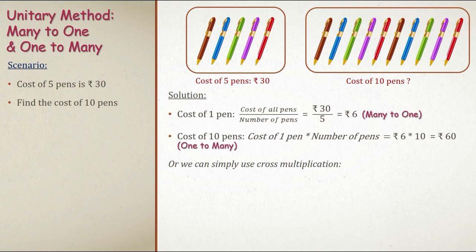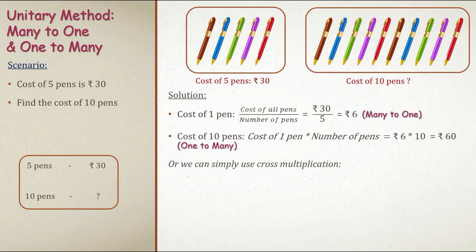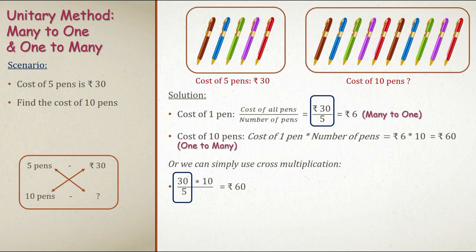Now there is something called the unitary method which is a mix of both many to one and one to many. Cost of five pens is rupees 30 and we need to find the cost of ten pens. Finding the cost of ten pens would be simple if we knew the cost of one pen. So we derive it: cost of one pen is rupees 30 divided by 5, which is rupees 6. Then multiply by 10 to get rupees 60. Or we can simply use cross multiplication: 30 into 10 divided by 5 equals 60.